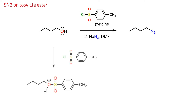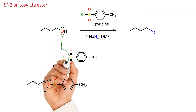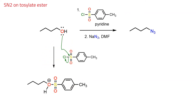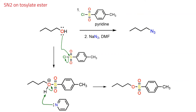The activation process begins with the nucleophilic alcohol attacking the electrophilic sulfur on tosyl chloride and displacing the chloride leaving group. The intermediate oxonium species is then deprotonated by the pyridine base, and this yields the tosylate intermediate.